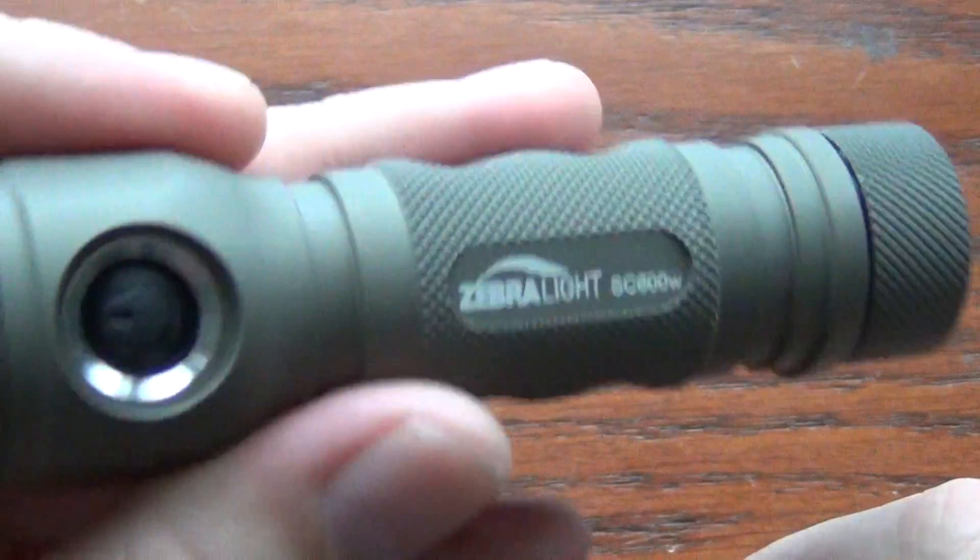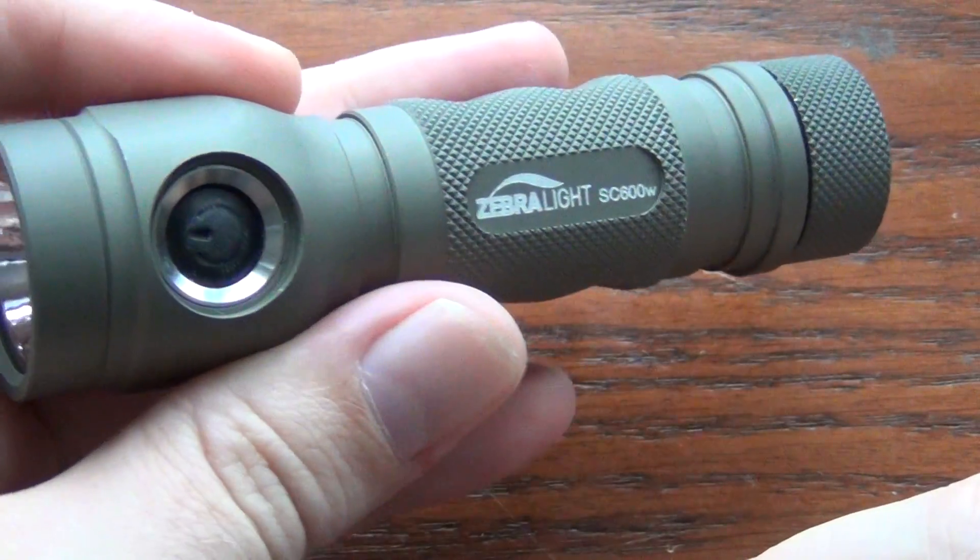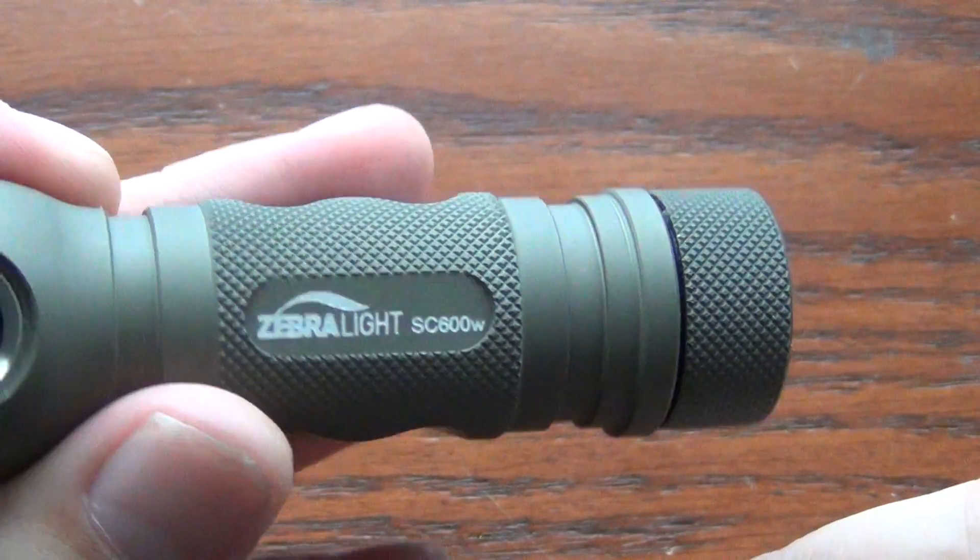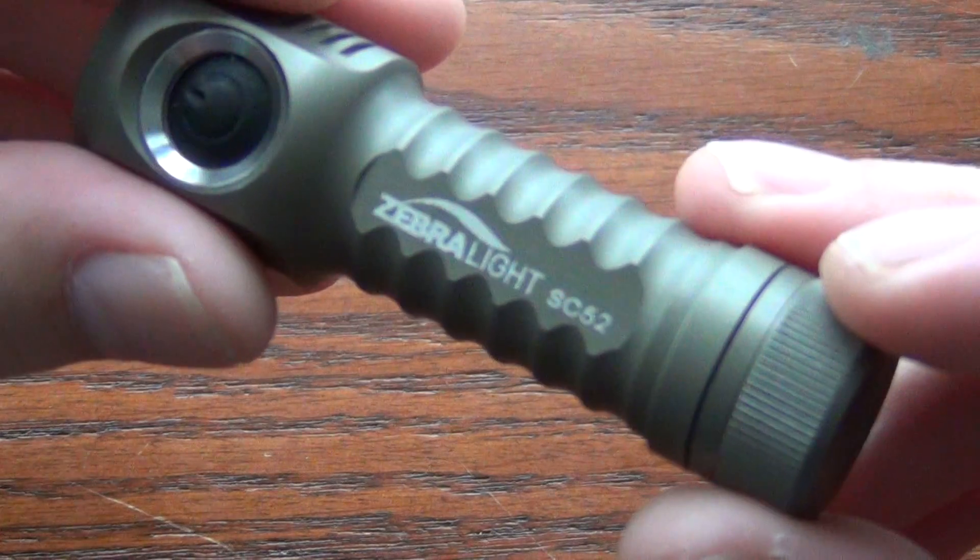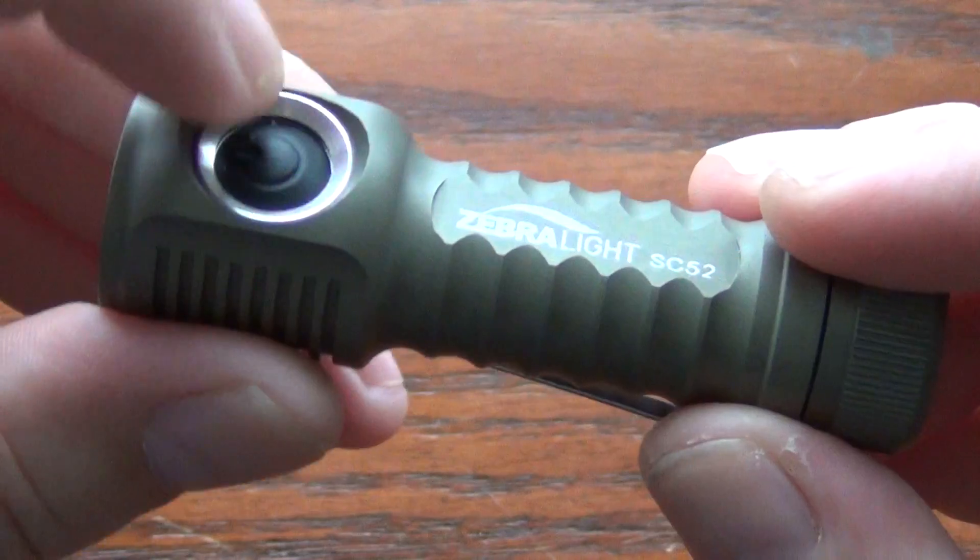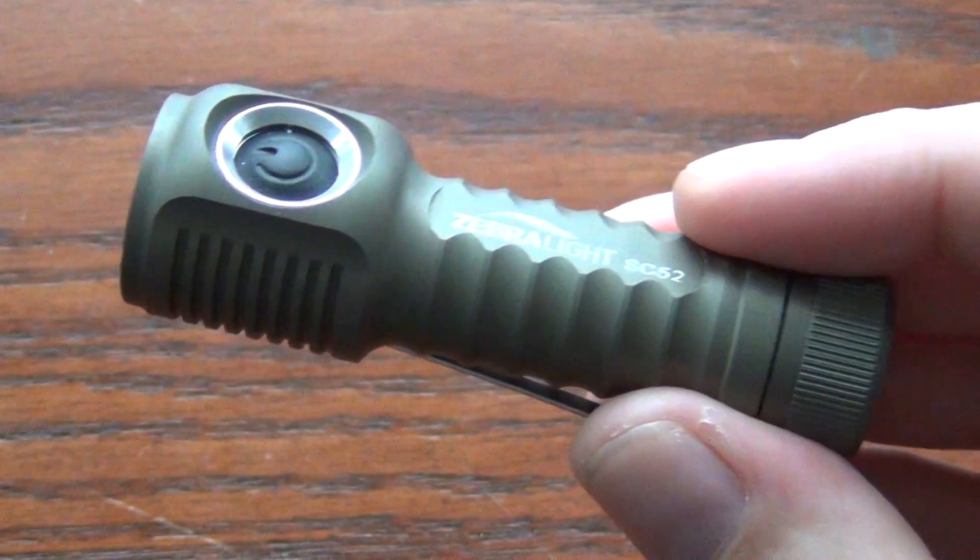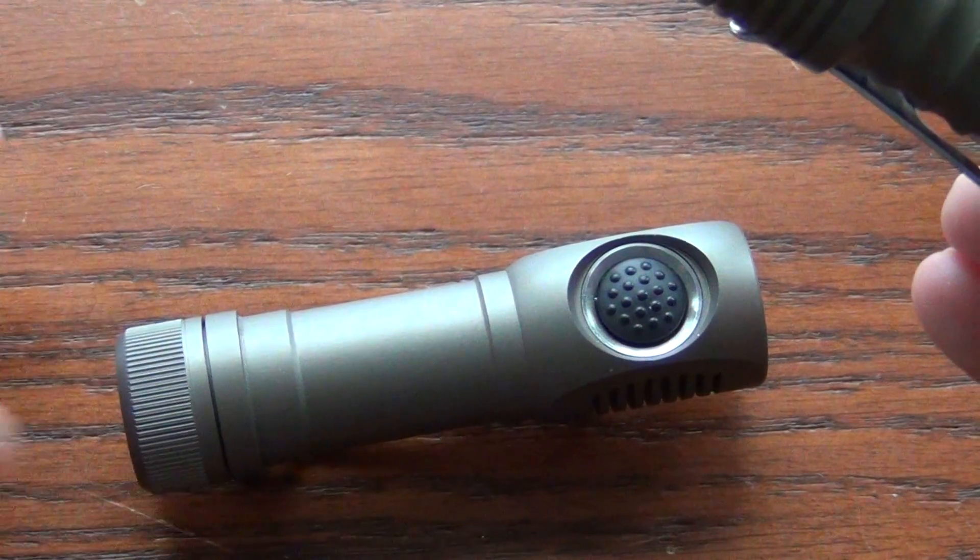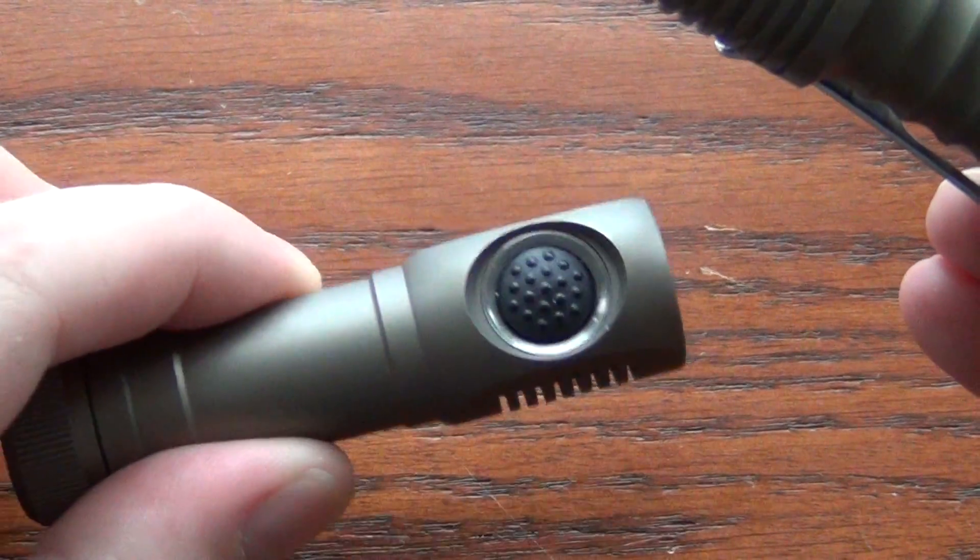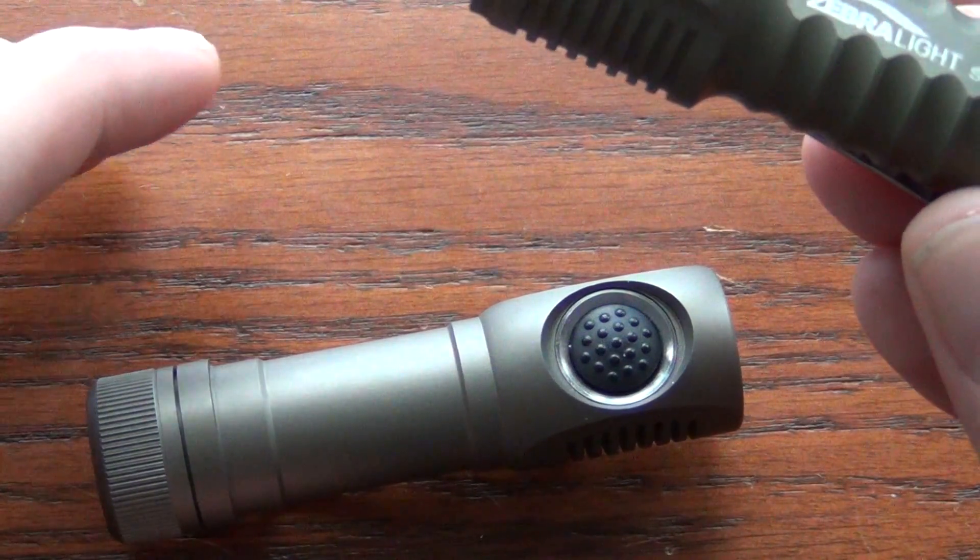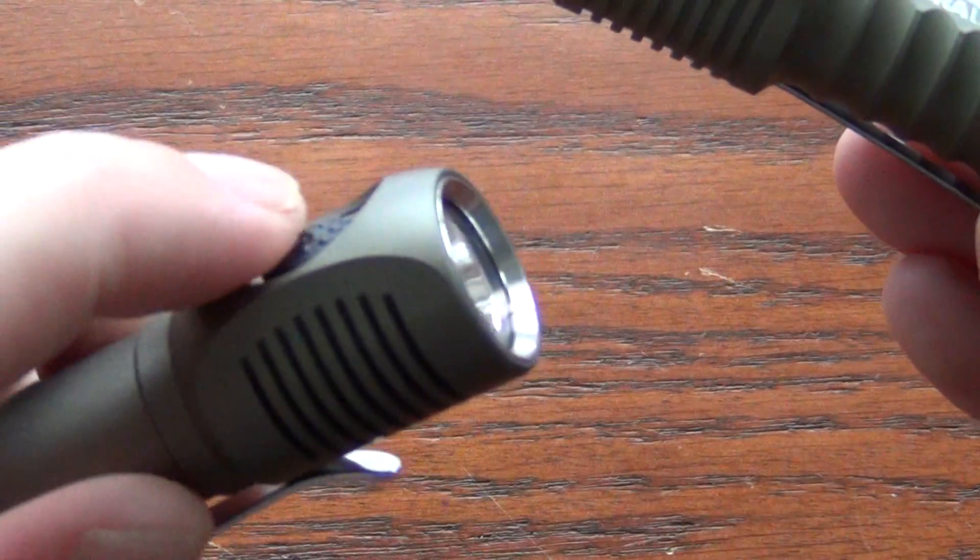This is another one you guys should check out. This is a SC600. You can either get the neutral or the cool white version. But that's another video. In this one I just wanted to show this very cool new light from Zebralight. They've fixed all the issues that were present in the SC51, including this didn't support 14500 batteries which are the lithium rechargeable. And the biggest one was the switch.